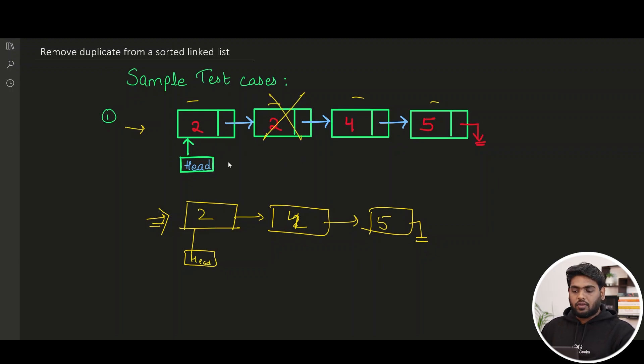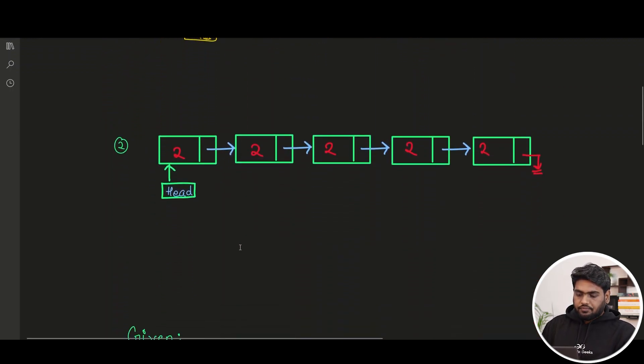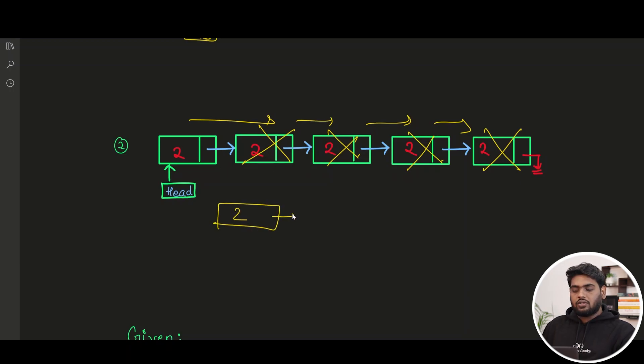So this is what we have to perform for the next one. As you can see here, all the values are actually getting repeated, so we do not have to keep the repeated values. All the values that are being repeated, we are going to delete them all, and eventually we have to give one value that is not getting repeated. In this case, this is going to be our answer.